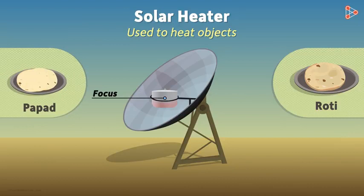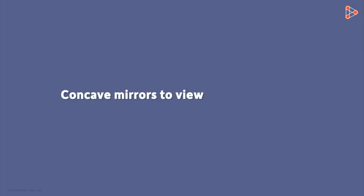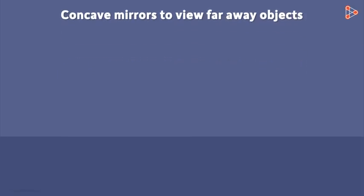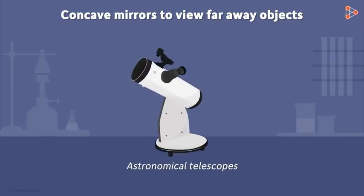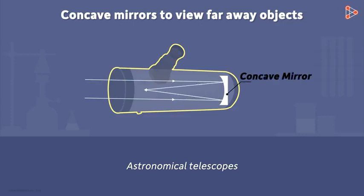Where else in the world do we use these types of mirrors? We can use concave mirrors to view objects which are very far away from us. I am talking about astronomical telescopes. When the parallel rays of light from a distant star enter the telescope, they fall on the concave mirror placed on the opposite side. This concave mirror then converges all the light at a focal point, where the image of the star is formed.